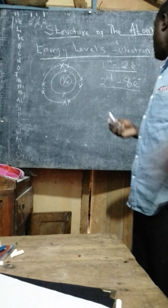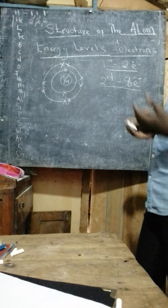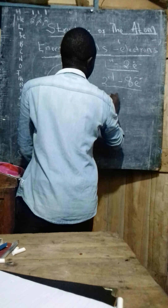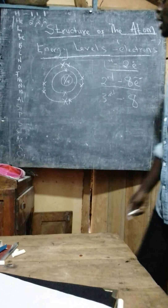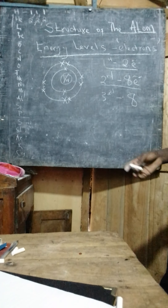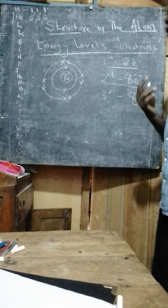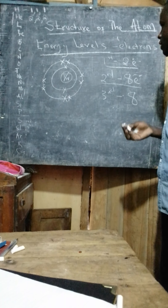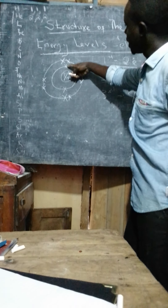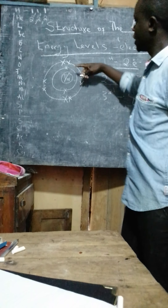It is very important to note that the first energy level — that is, the energy level surrounding the nucleus — so we have our nucleus there with protons and neutrons. The first energy level will take a maximum of two electrons.